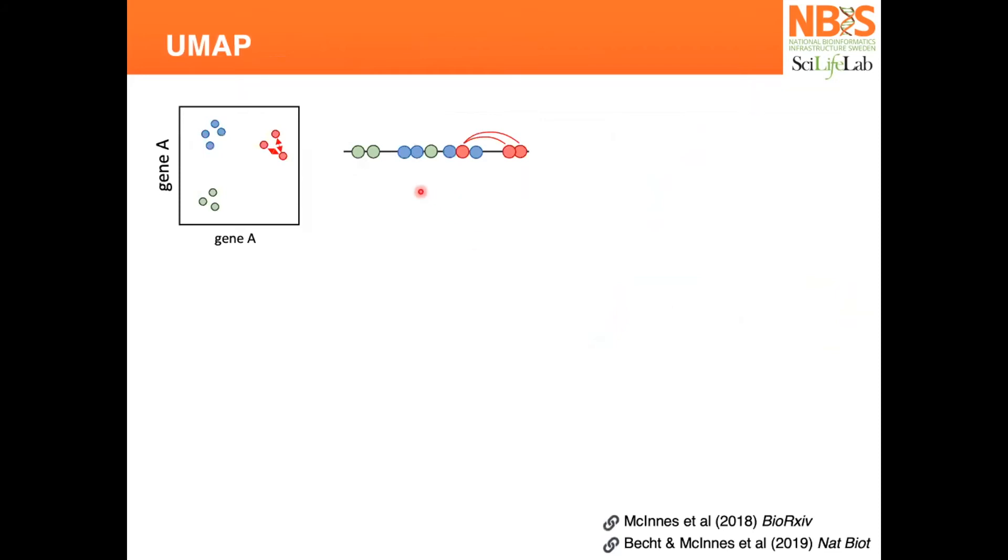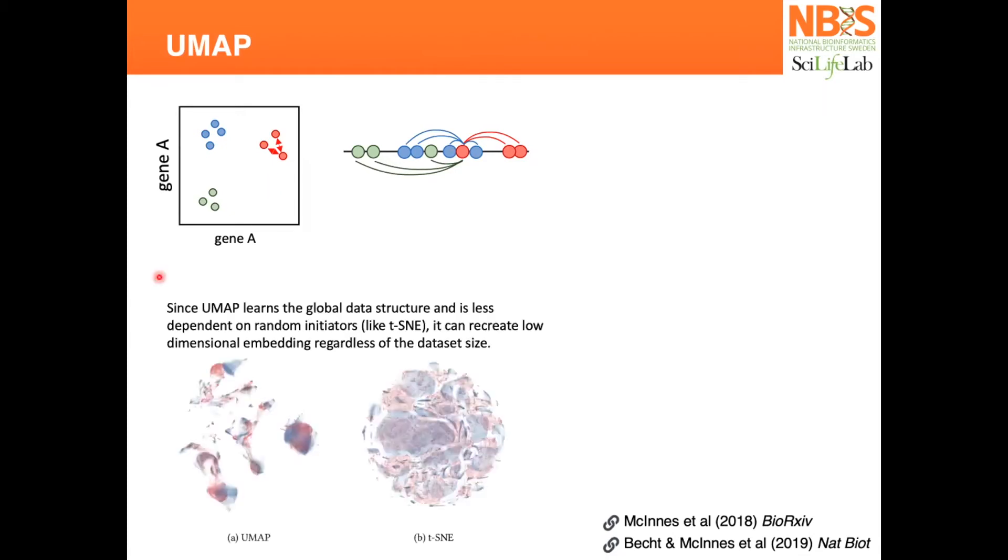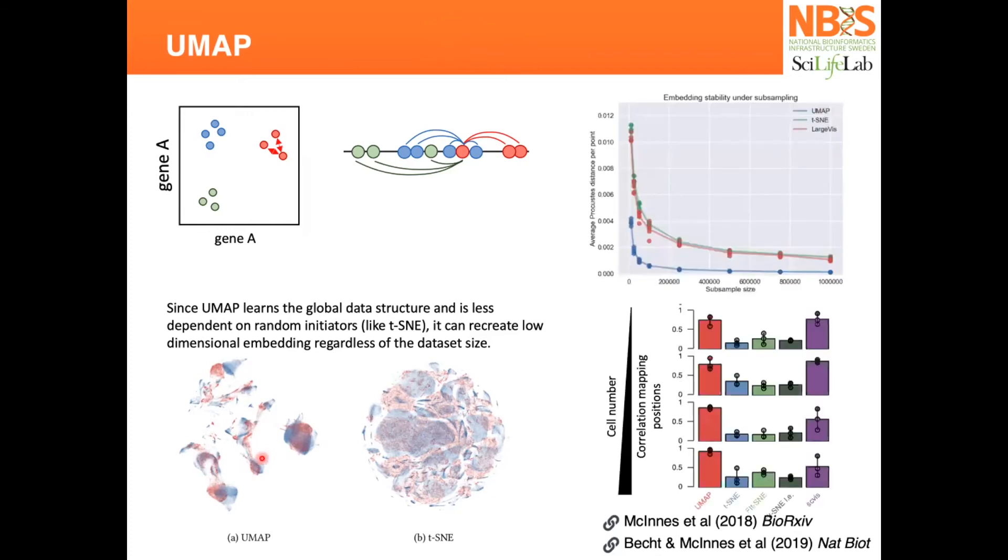If t-SNE only cares about the distance between nearest neighbors, UMAP also cares about the distance to the other points. That gives you an idea of the global embedding - how far these points should be from all the other points. You can pick two different datasets and run UMAP, and they will overlay on top of each other.